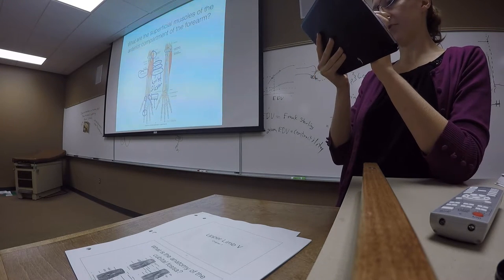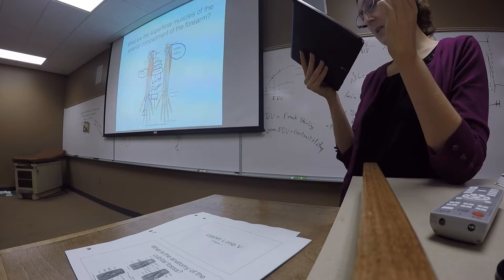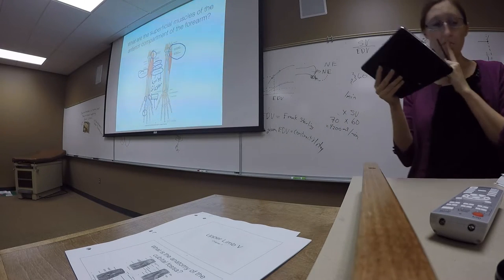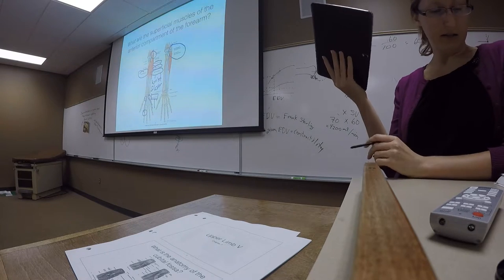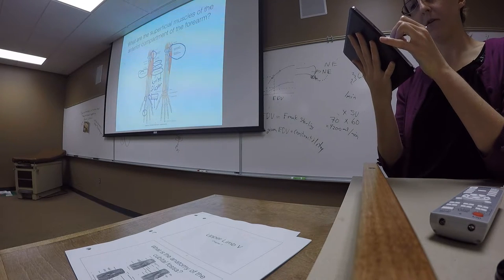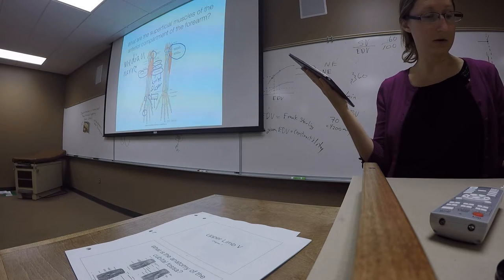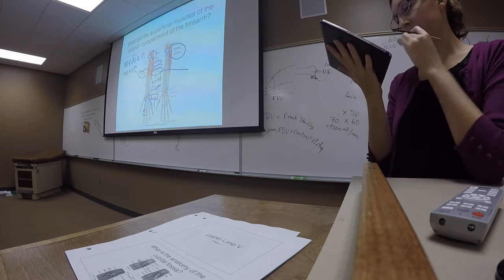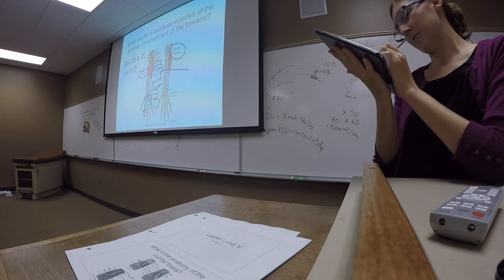A quick note about the flexor carpi ulnaris: in addition to having a head on the medial epicondyle of the humerus, it also has a head on the ulna. As for nerve innervation, most of these wrist flexors are innervated by the median nerve, except for the flexor carpi ulnaris, because anything with 'ulnaris' is very typically innervated by the ulnar nerve.